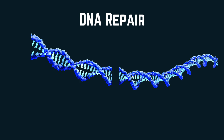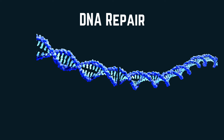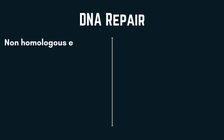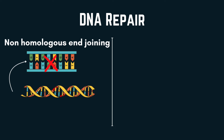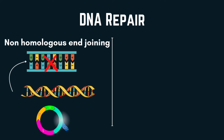After double strand breakage, our natural reaction is repair. There are two main repairing systems. The first is Non-Homologous End Joining, or NHEJ, which directly ligates broken DNA ends without referring to a homologous template. This is an error-prone process because it can result in small insertions or deletions at the breakage site, which can lead to gene knockout or loss of function mutations. This mechanism is active more during the G1 phase.